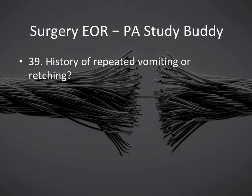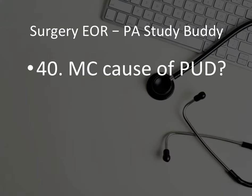History of repeated vomiting or retching: that is Mallory-Weiss tear. They'll tell you the patient went out the night before, was drinking profusely, got home, was retching and vomiting, and got some blood in their sputum — that should make you think of Mallory-Weiss tear. Most common cause of peptic ulcer disease is H. pylori. H. pylori — peptic ulcer disease — most common cause of upper GI bleed is also peptic ulcer disease.